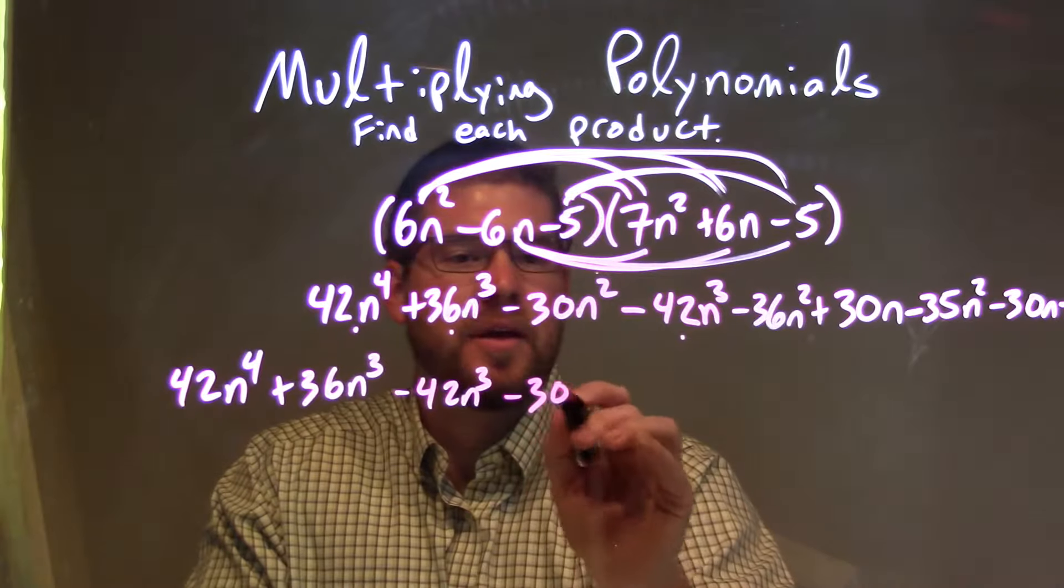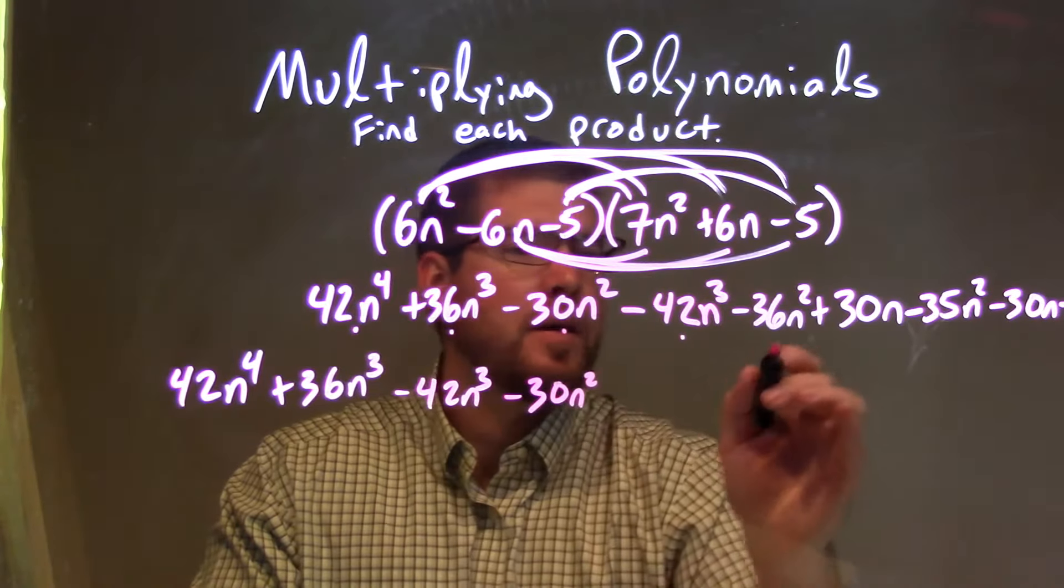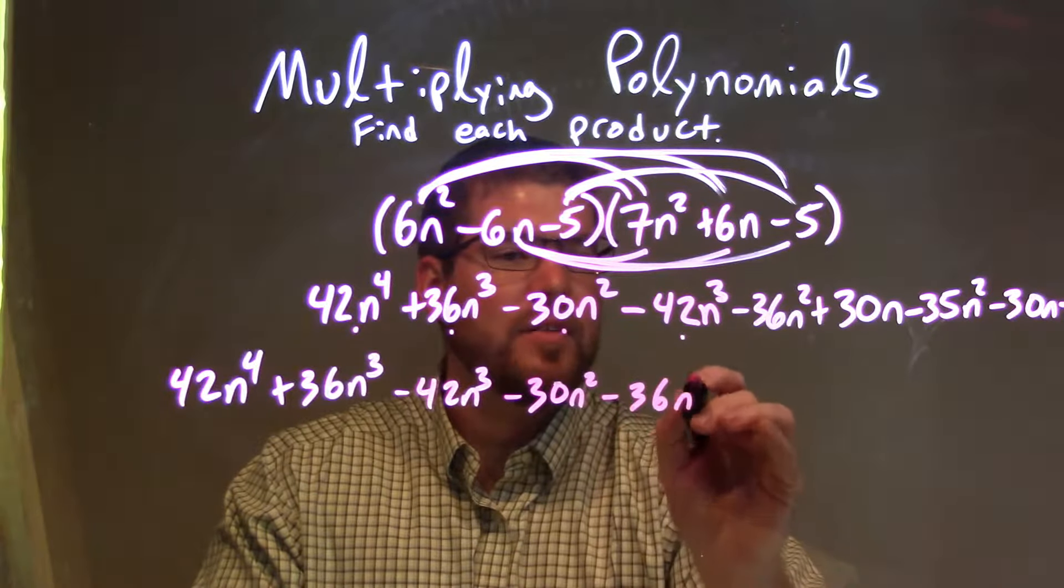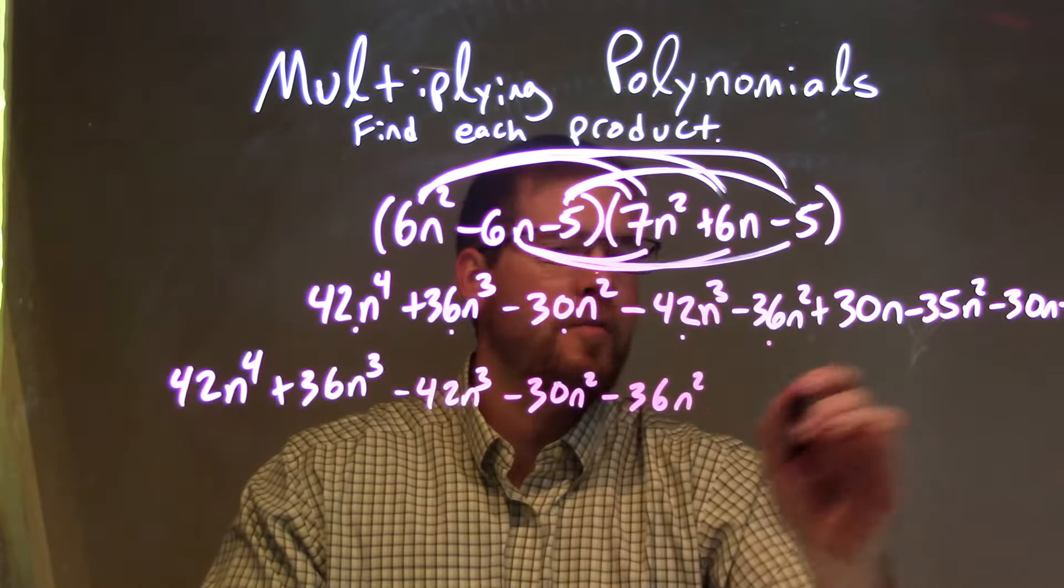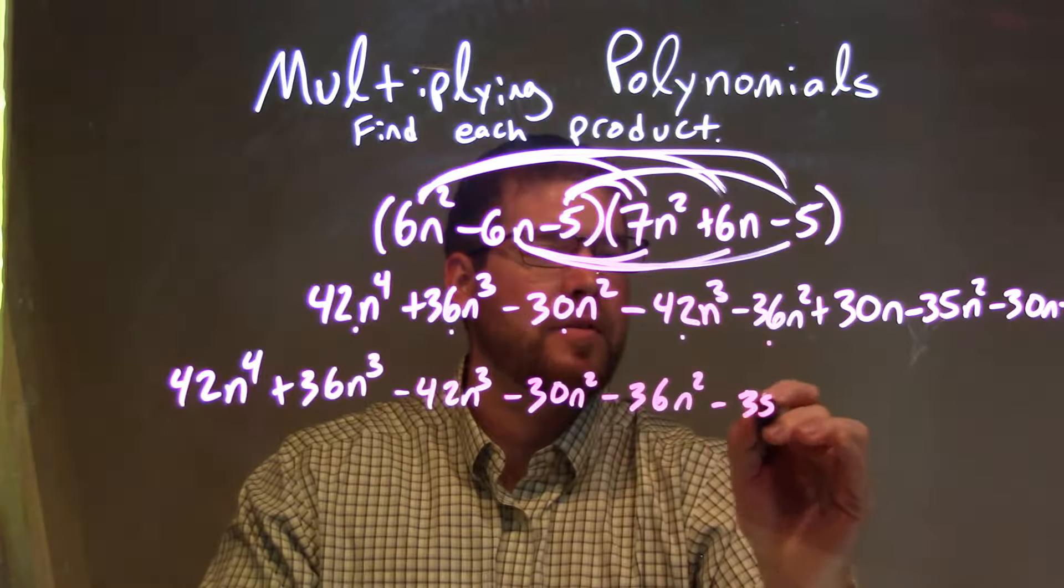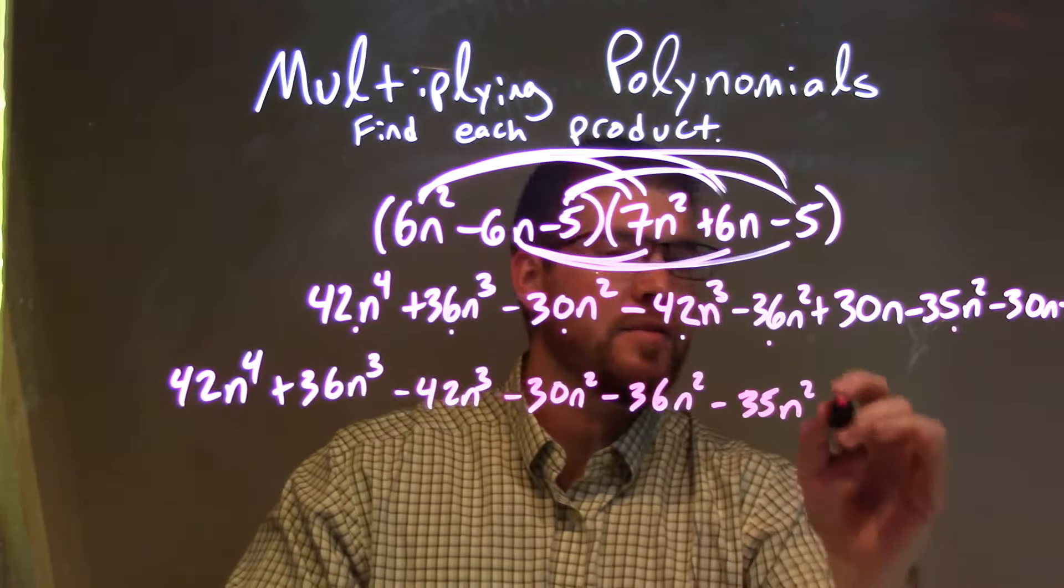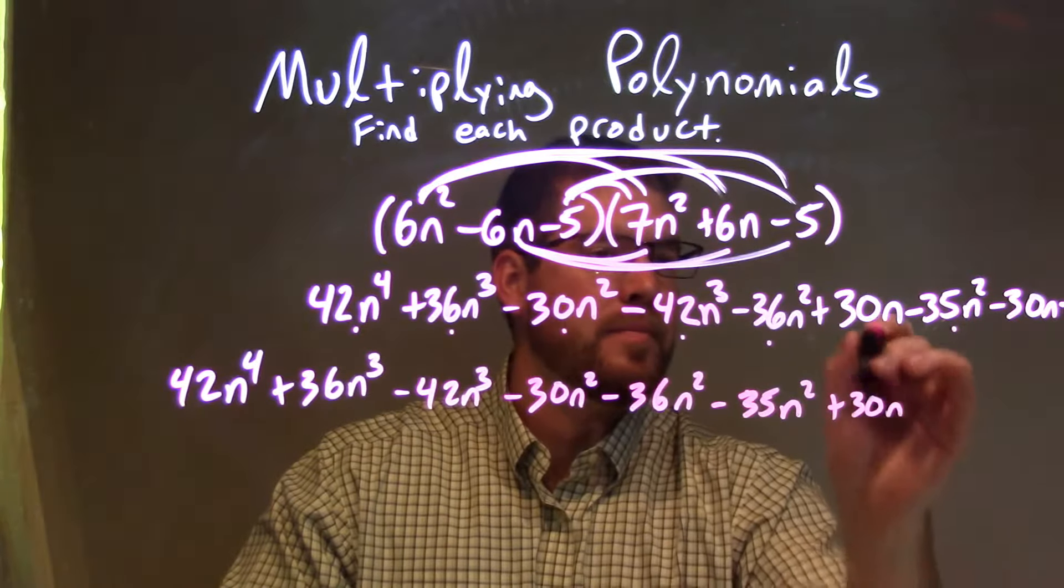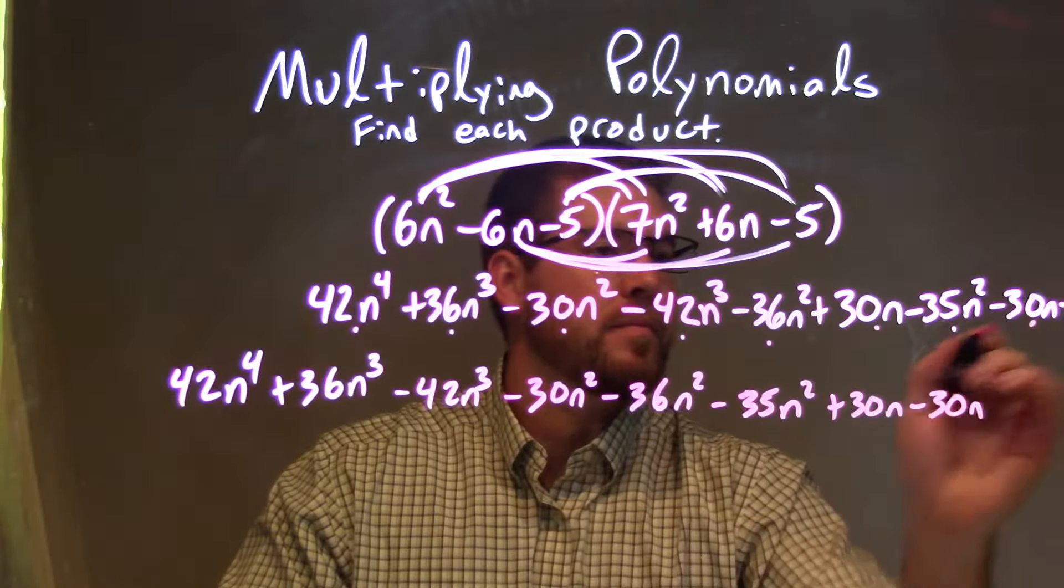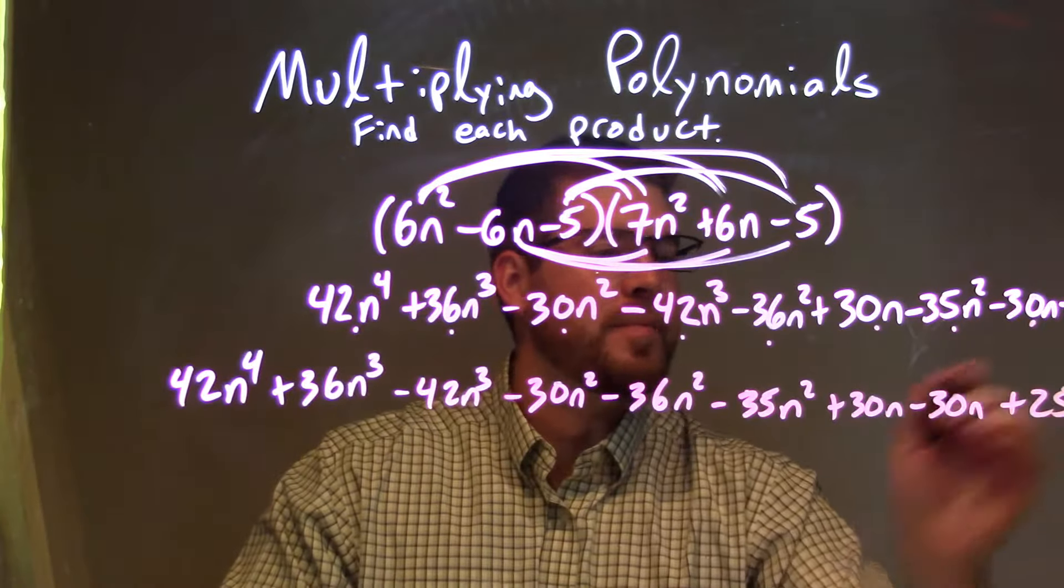The third power is the second power, so we have a minus 30n squared here, and a minus 36n squared, and we have a minus 35n squared. Lastly, it's just the ones with the n, so we have a plus 30n and a minus 30n, and then a plus 25 at the end.